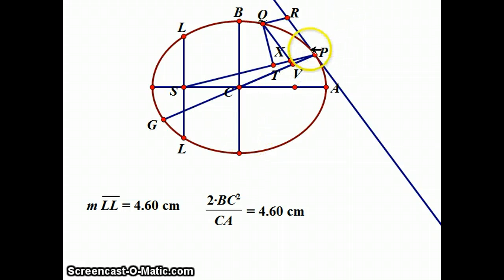Newton is trying to prove a theorem about ellipses, where Q and P are random points on the ellipse. He's going to create a proportion with a constant called L. L can be thought of as the distance through the focus that's perpendicular to the major axis, called the lattice rectum, which is 4.6 centimeters in this picture. That also equals 2BC² over CA.